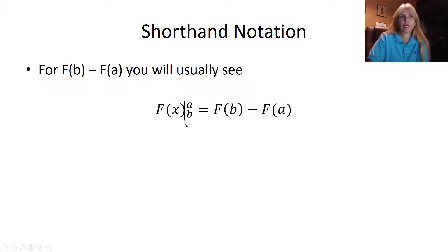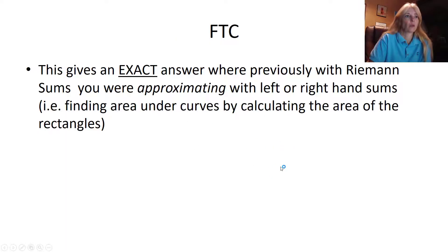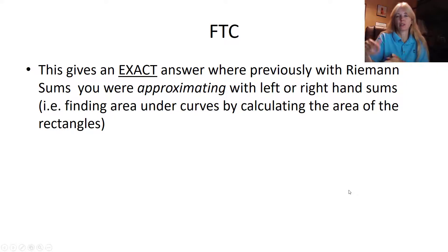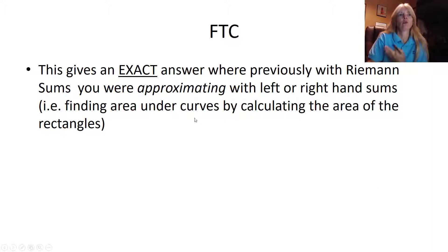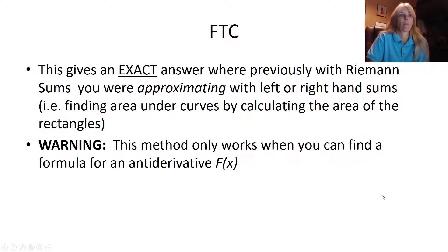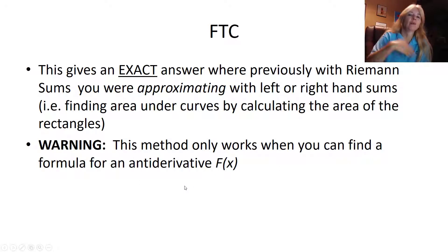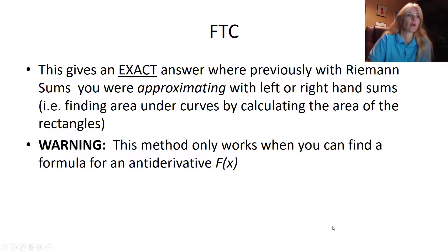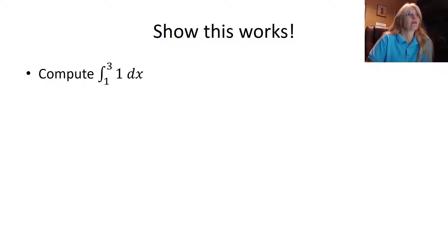A lot of times you will see this straight up-and-down bracket symbol for evaluating. This gives you exact area, whereas back in chapter 5 we were using rectangles and getting pretty good estimates. This method gives exact area because it takes limits — letting the number of rectangles go to infinity and the width go to zero. This only works when you can find a formula for the antiderivative, which is why we still need Riemann sums for tables and other situations.